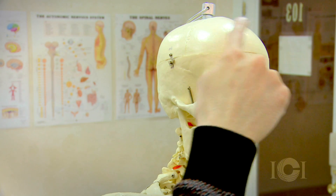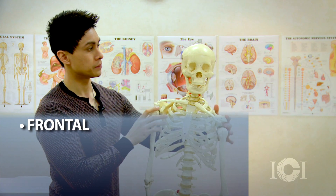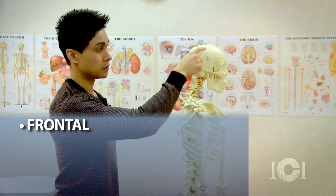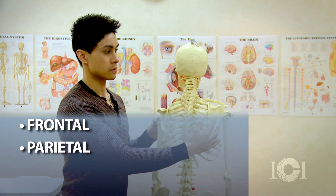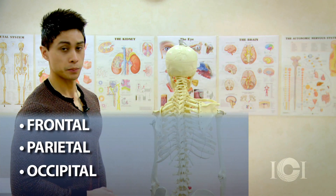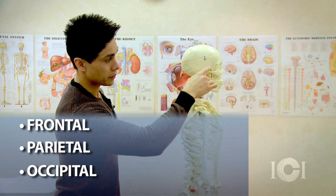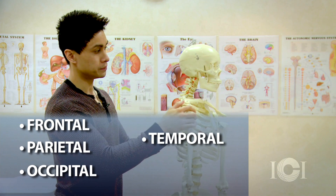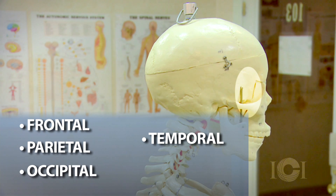Let's review. What is this area of the skull called? This is the frontal bone. What is this area of the skull? That's called the occipital bone. What is this area of the skull called? That's called the temporal bone. And this area right here? That's called the sphenoid bone.